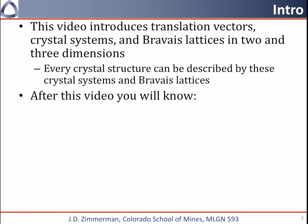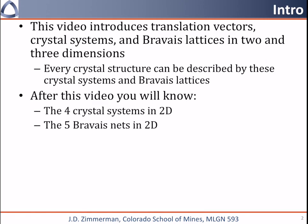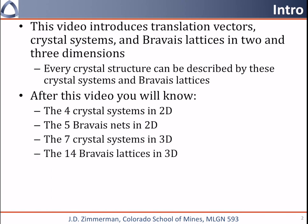After this video, you will know the 4 crystal systems in 2 dimensions and the 5 Bravais nets in 2 dimensions. We will also discuss how we came up with these and why there are not more or fewer of each. We will then extend these into 3 dimensions and discuss the 7 crystal systems and the 14 Bravais lattices. Finally, we will discuss conventions for choosing the best lattice.